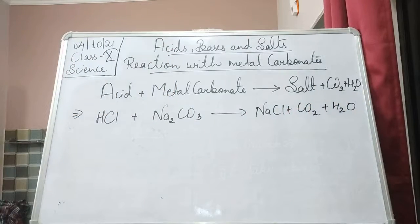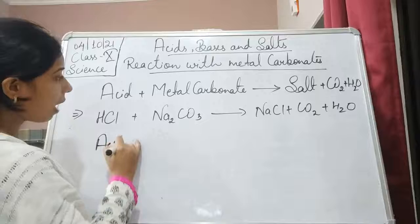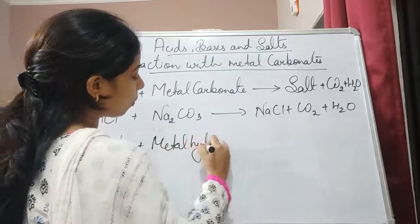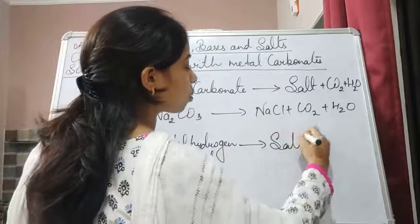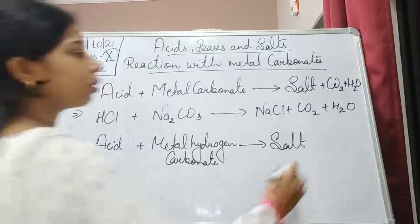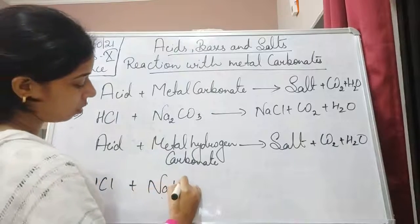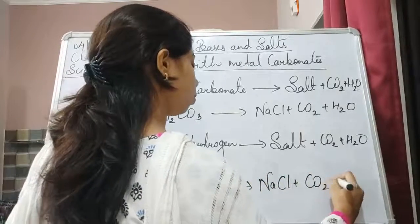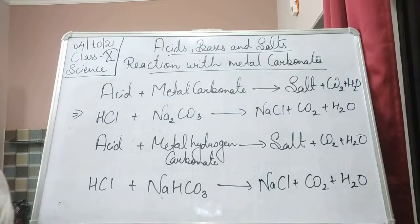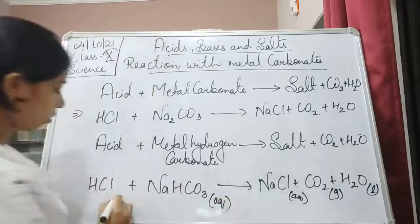We have seen this reaction earlier. Now if you look at the same reaction with metal hydrogen carbonate — when the acid reacts with metal hydrogen carbonate, there is again formation of salt plus carbon dioxide plus water. So if HCl is reacting with NaHCO3, then there is formation of NaCl plus CO2 plus H2O. Sodium chloride is in aqueous solution, CO2 is a gas, and H2O is a liquid.